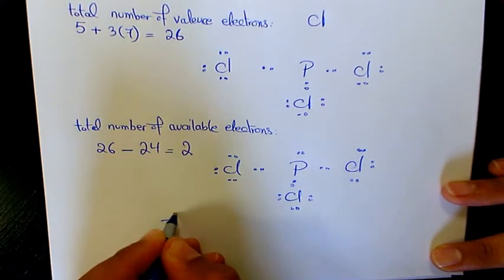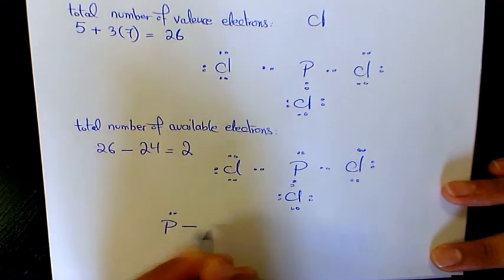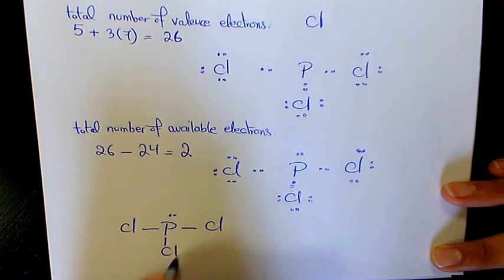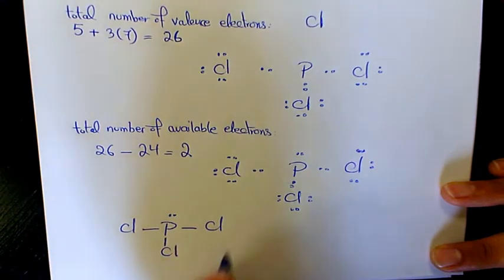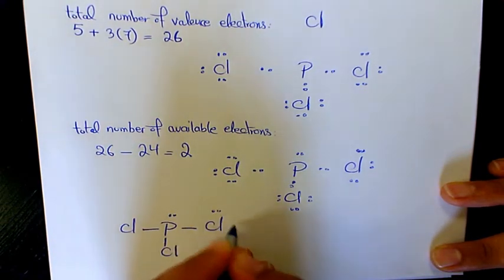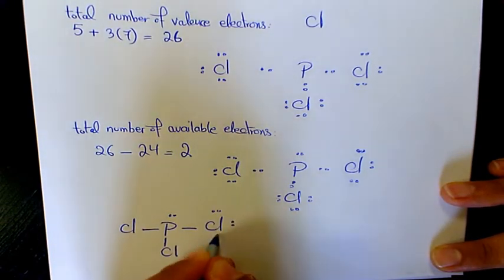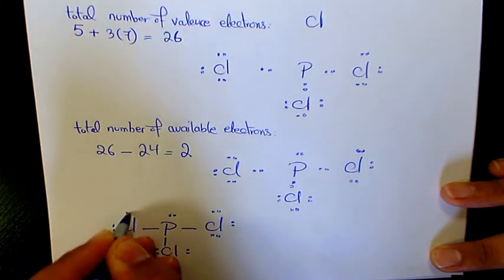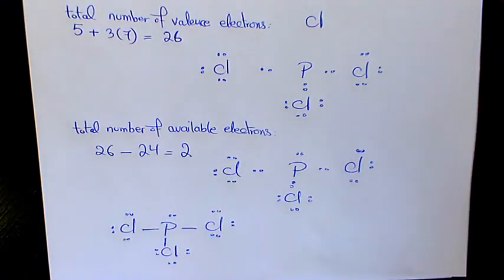The Lewis structure is complete — we replace the shared electrons with dashes to show the bonds. That's the Lewis structure for PCl₃. I hope you enjoyed this video; please leave a comment if you have any questions. Thank you for watching and have a great day.